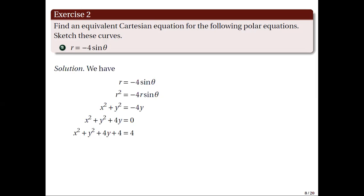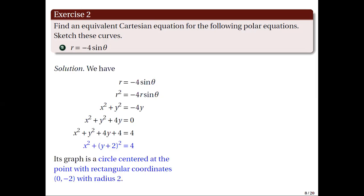Expressing y squared plus 4y plus 4 as a perfect square gives us x squared plus the quantity y plus 2 squared equal to 4. Hence, its graph is a circle centered at the point with rectangular coordinates (0, negative 2) with radius 2. Its graph is shown on the right.